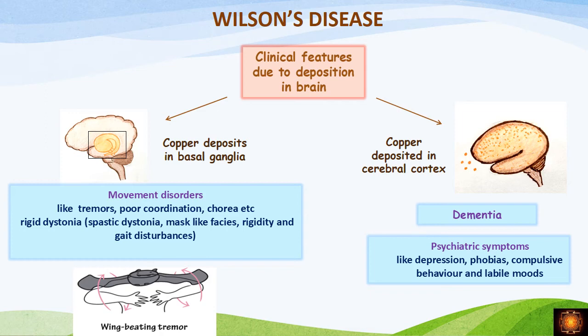The next commonly affected organ is the brain. Copper deposition occurs first in the basal ganglia. When deposition occurs in the basal ganglia, the first change noticed is movement disorders — the patient will have tremors, typically wing-beating tremors. Later the patient will have poor coordination, chorea, and rigid dystonia. These are the initial stages where deposition is in the basal ganglia.